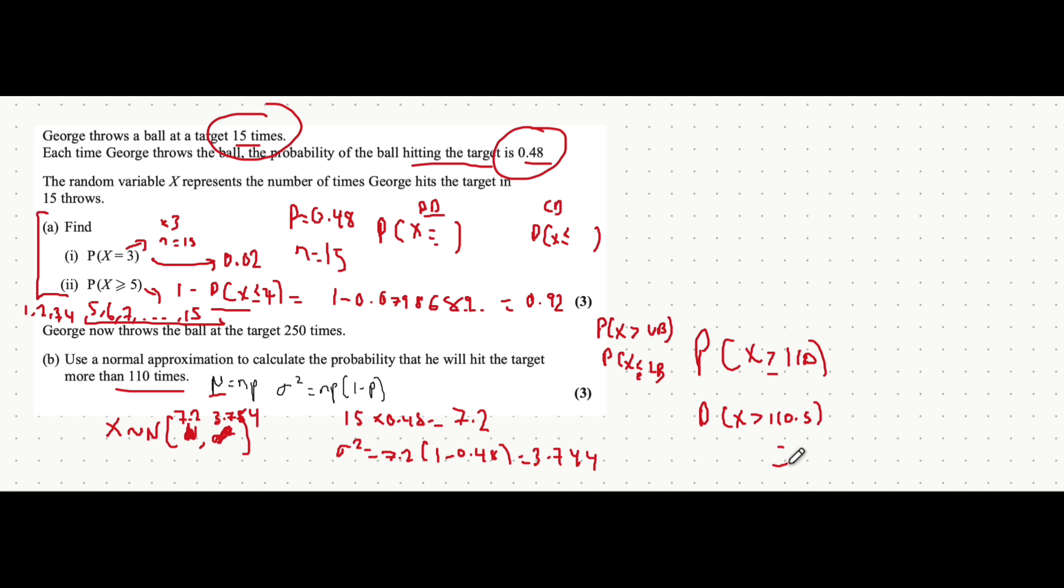So I'm now going to go to my calculator. Go to menu, distribution, normal CD. My lower, I'm going to put it as 110.5. My upper, I'm just going to put a very large number. Like 5 nines. The standard deviation, I'm going to put the square root of 3.744. And the mean, I'm going to put 7.2.